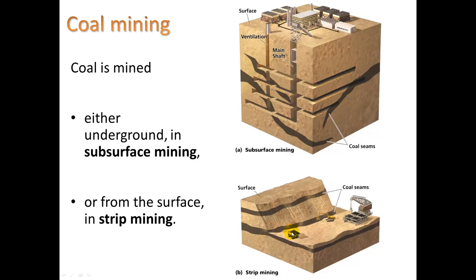With strip mining, one of the big problems is acid mine drainage — you're leaving behind exposed rock, and that rock often contains sulfur. When sulfur combines with oxygen in the air you get sulfur dioxide (SO₂), and when you add water you get sulfuric acid runoff. That can lower the pH significantly of creeks and other waterways.